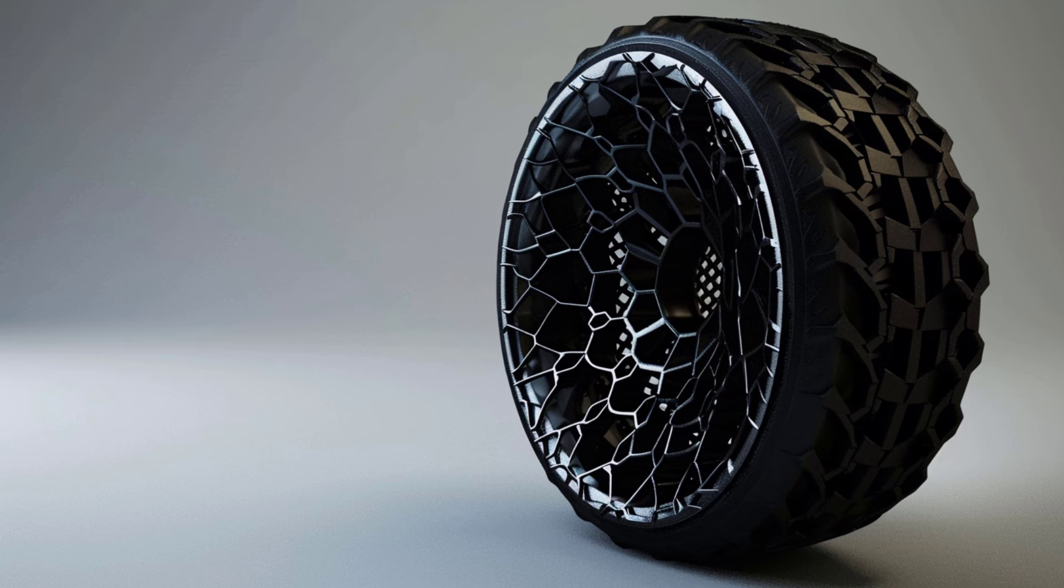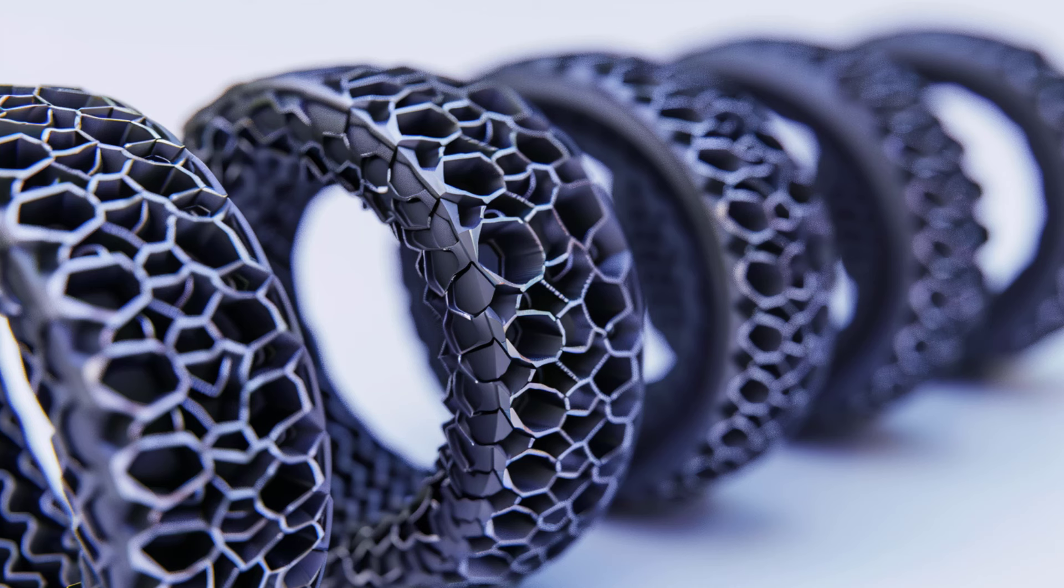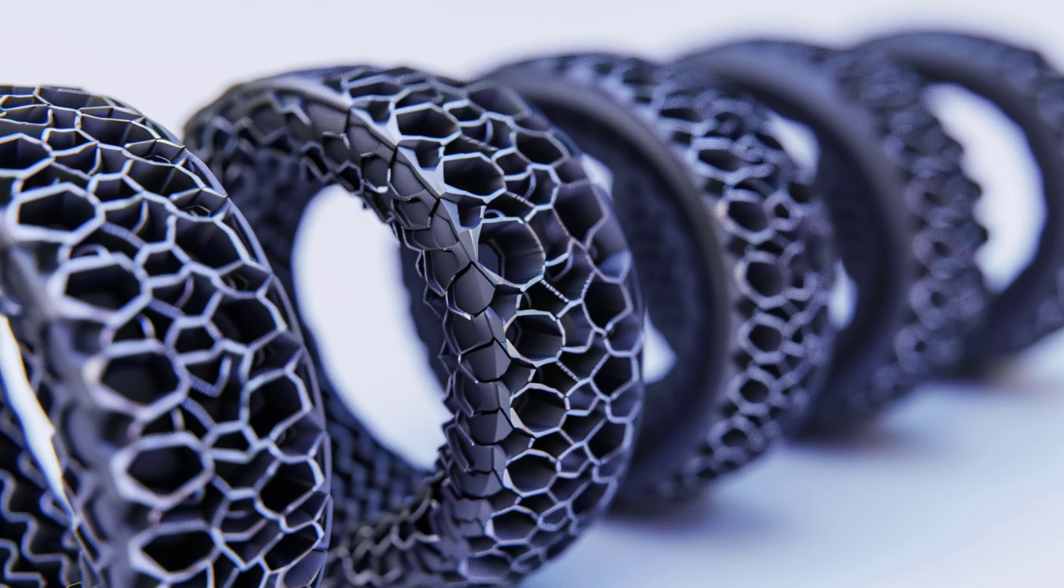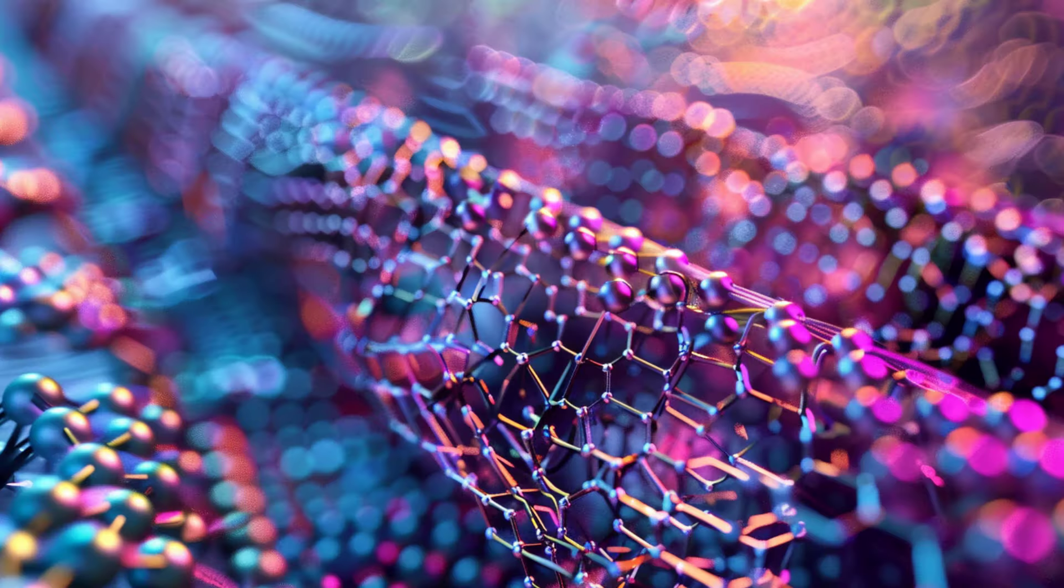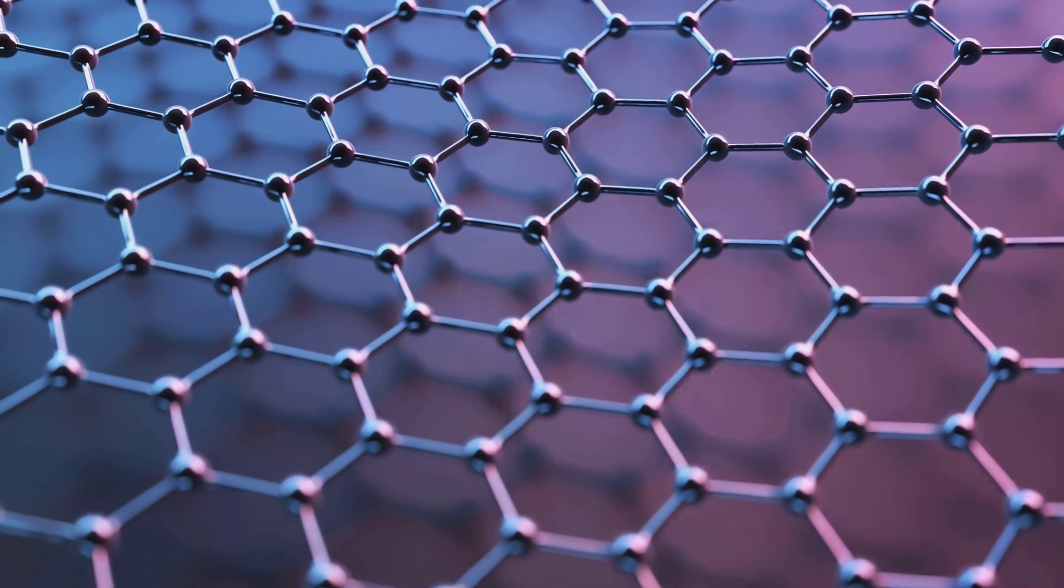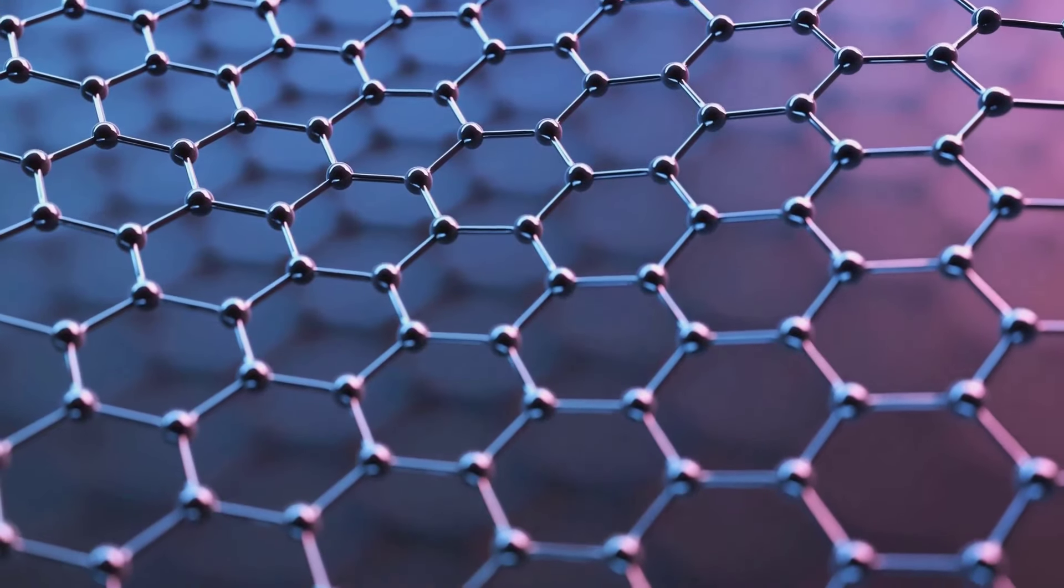Synthesis of graphene can be accomplished in various ways. One of the most common is known as exfoliation, where layers of graphite are separated using chemical or mechanical processes. Another method is chemical vapor deposition, where carbon atoms are deposited onto a substrate to form a thin layer of graphene.